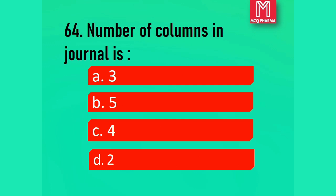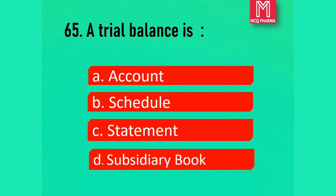Question number 64. Number of columns in a journal is: Option A, 3. Option B, 5. Option C, 4. Option D, 2. Correct answer: Option B, 5. A typical general journal has at least 5 columns. Question number 65. A trial balance is: Option A, Account. Option B, Schedule. Option C, Statement. Option D, Subsidiary book. Correct answer: Option C, Statement.